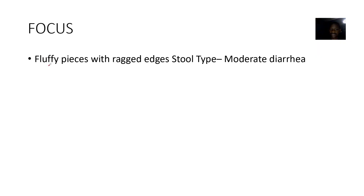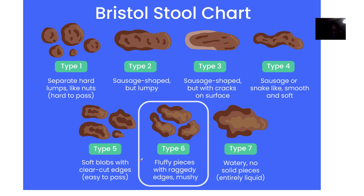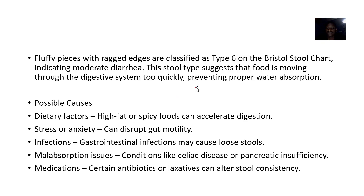The next stool type is known as fluffy pieces with ragged edges. If you look at this, it is a Type 6 on the Bristol Stool Chart. So fluffy pieces with ragged edges is classified as Type 6 on the Bristol Stool Chart, indicating moderate diarrhea.